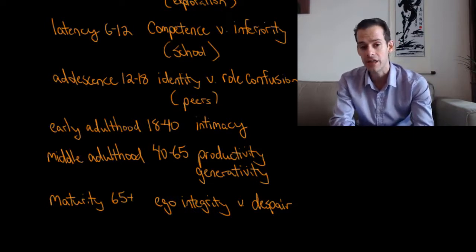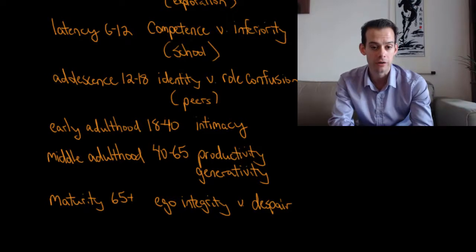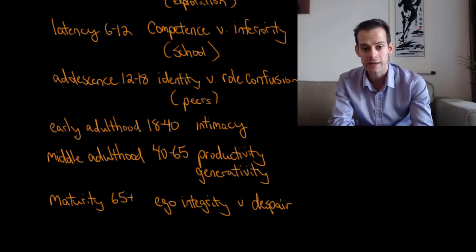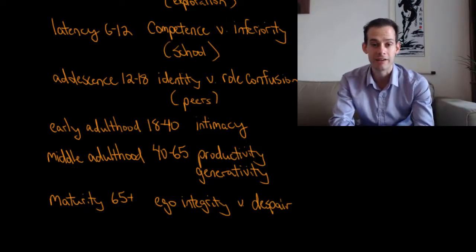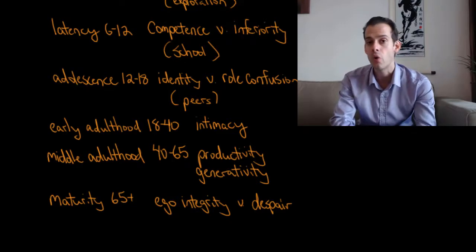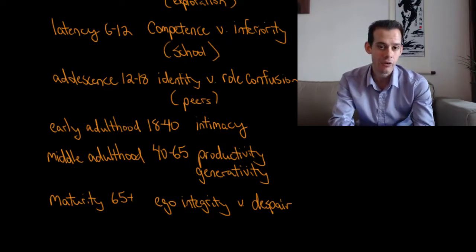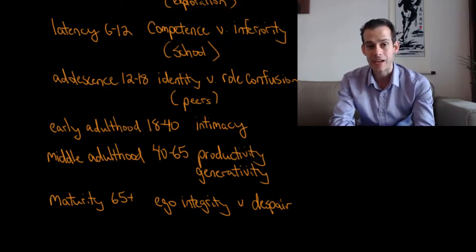Once you do this, you're ready to move into the stage of early adulthood, lasting from 18 to 40, where the primary task is developing a sense of intimacy. You know who you are, and now you figure out how do I make this relationship include another person? How do I develop a close relationship with somebody else and a sense of intimacy?